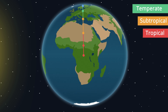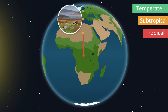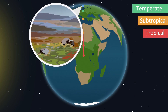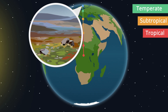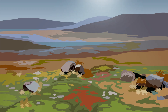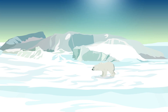We finish our journey in the very north. It's cold all year round. There are areas here where the ice melts in the summer and allows for a little vegetation to grow, but in the extreme north the ice is there all year round. This is the polar climate zone.